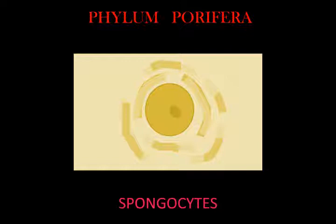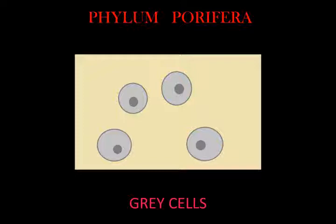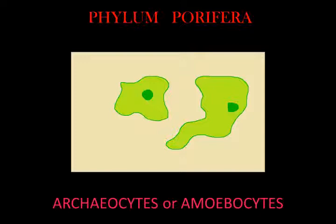Spongocytes are cells which secrete a form of collagen that polymerizes into spongin, a thick fibrous material that stiffens the mesohyl. Myocytes are cells that conduct signals and cause parts of the animal to contract. Archaeocytes or amebocytes are amoeba-like cells with important roles in feeding and in clearing debris that block the ostia.